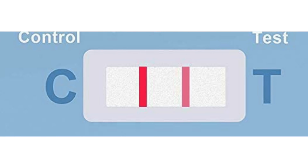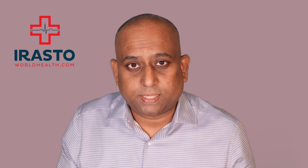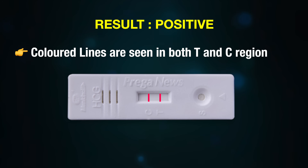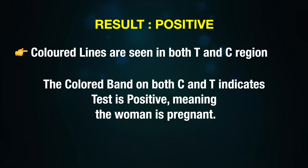Reading the UPT test results: C is the control line and T is the test line. First, check that there is a colored line in the C region after every test — this confirms the kit is working fine and is valid. If both lines are seen, the result is positive. The lines may be dark pink or purple; a colored band on both C and T indicates the test is positive, meaning the woman is pregnant.